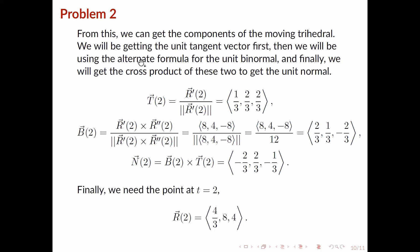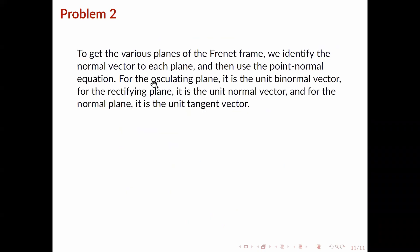We also need the point at t equals 2, which is simply r(2). With these vectors and the point, we can use them to obtain the various planes of the Frenet frame.